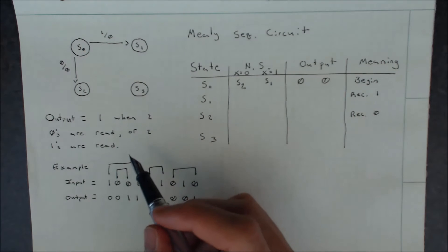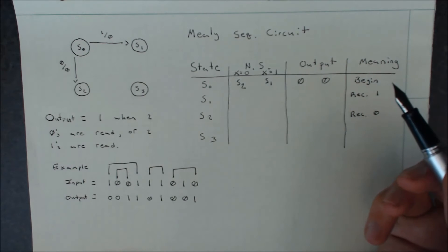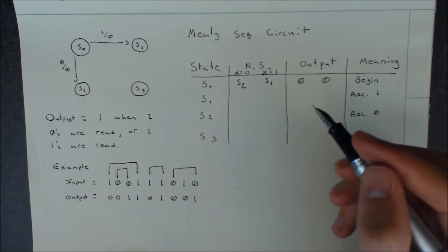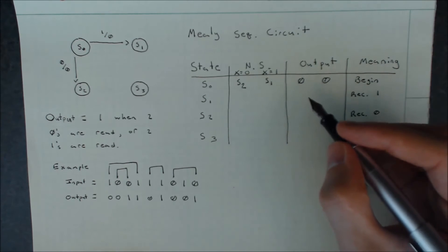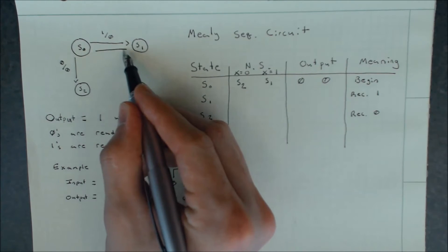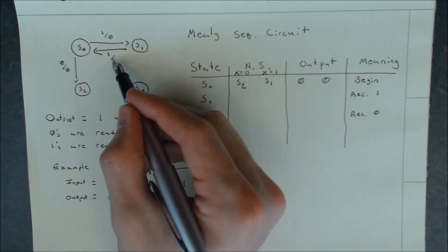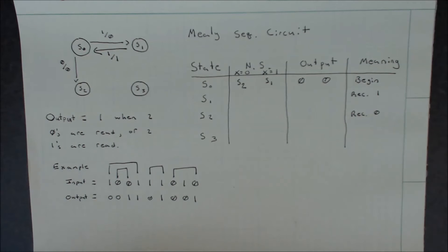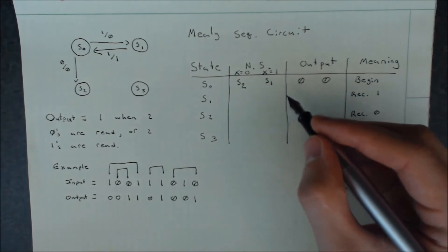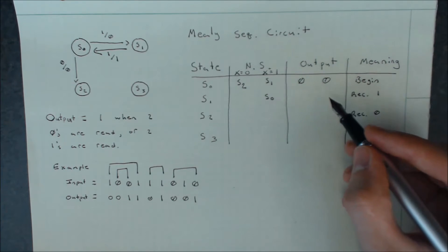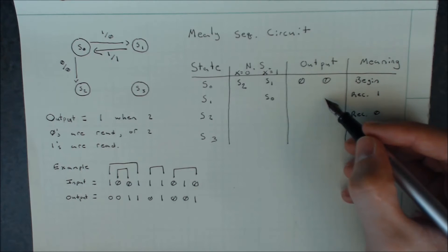Moving on, we can define what happens when we're in state S1. In state S1, we know that we've received a single one. If we receive another one, it makes sense — going by this example — that we would reset and go back to state S0, but this time we'll output a one, since we've received two ones and are now in a state where we haven't received any new single bits of a pair. So if we get an input of one at S1, we transition to S0 with an output of one.